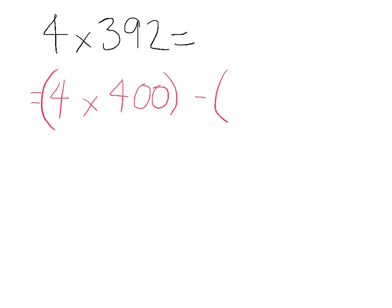And then we need to take away something because 400 is more than 392, and that's going to be 4 times the difference between 392 and 400, which is 8. So we're going to take away 4 times 8.